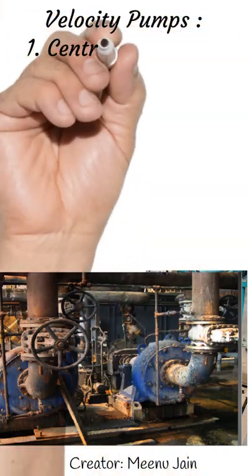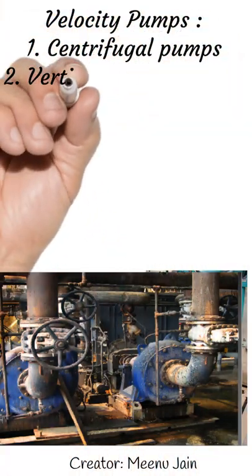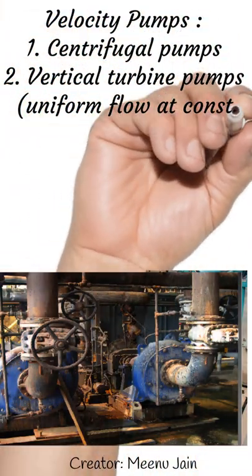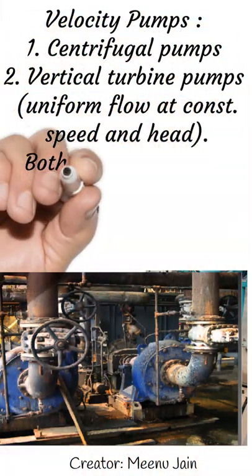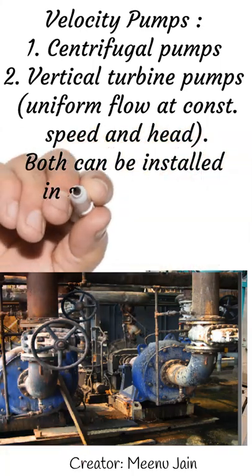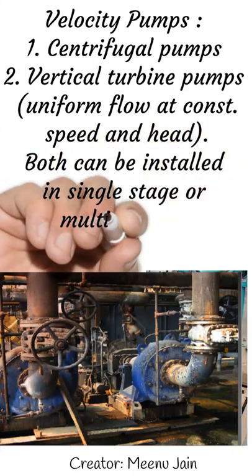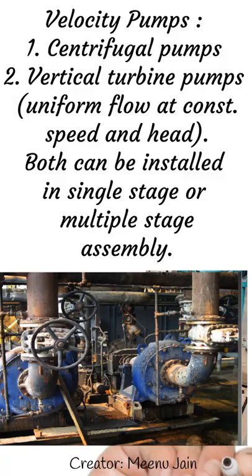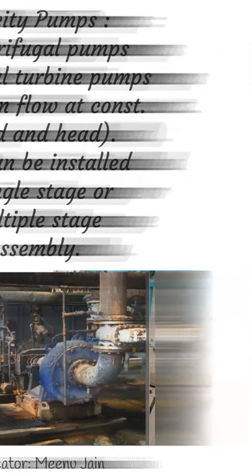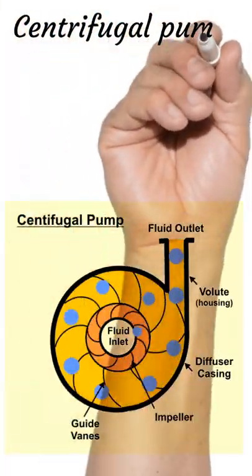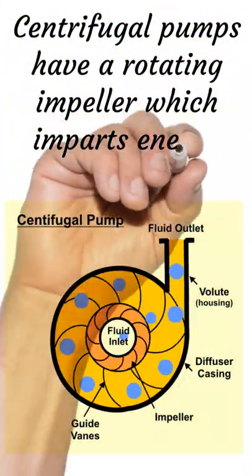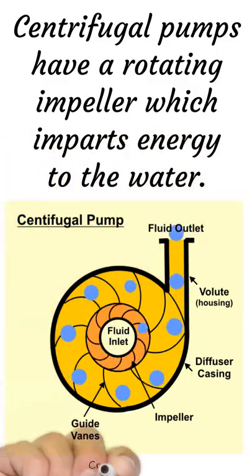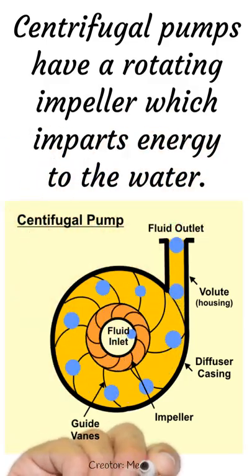Velocity pumps are centrifugal and vertical turbine pumps. They are used for uniform flow at constant speed and head. Both can be installed in single stage or multiple stage assembly. Centrifugal pumps have a rotating impeller which imparts energy to the water.